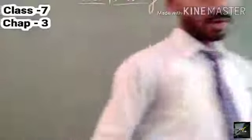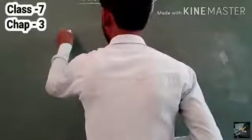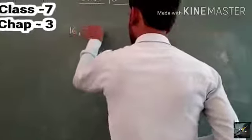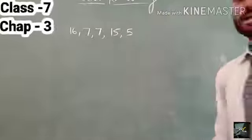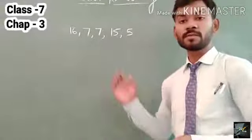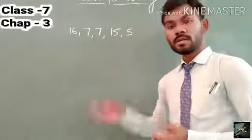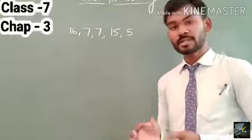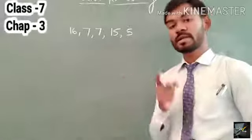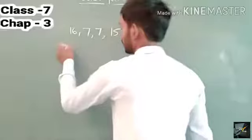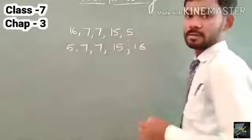Now let us see a question on median. The first question is: find the median of 60, 7, 7, 15, and 5. This is the given data and we have to find the median. First of all we write this data in ascending order, which gives us: 5, 7, 7, 15, 16.